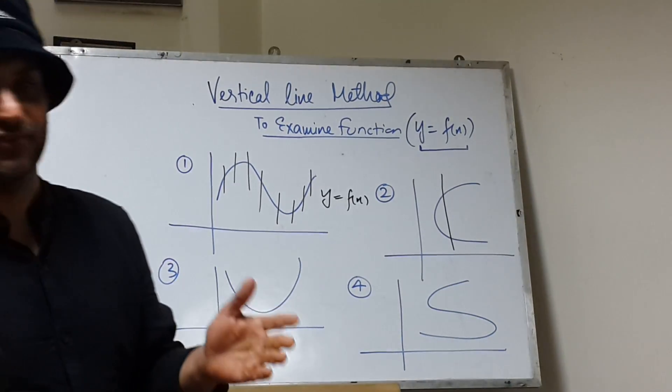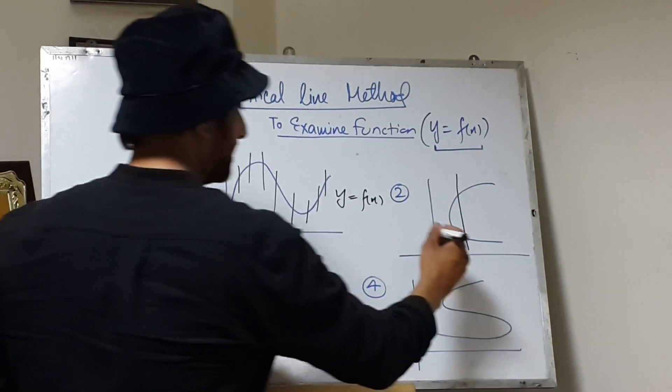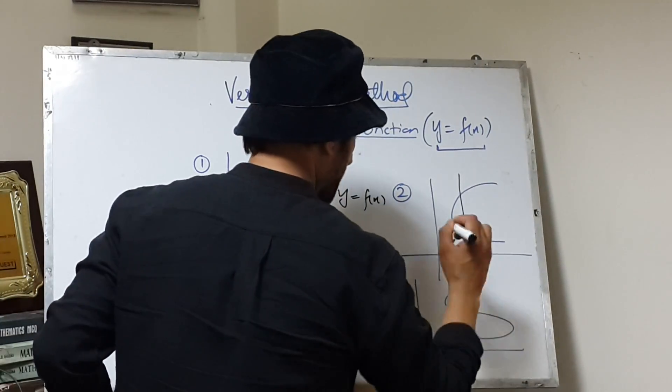One vertical line is sufficient because this vertical line is cutting the curve at two points. That is, corresponding to one x component,